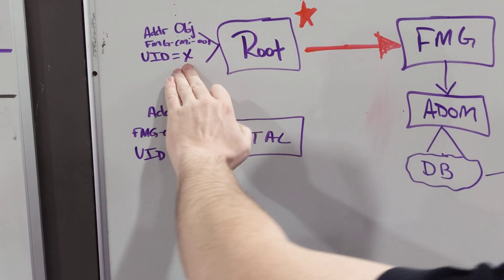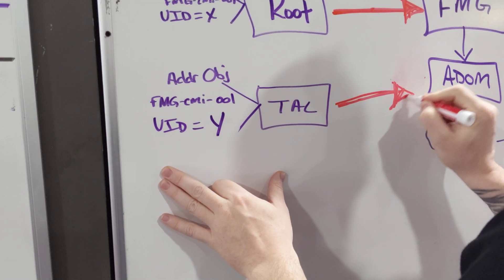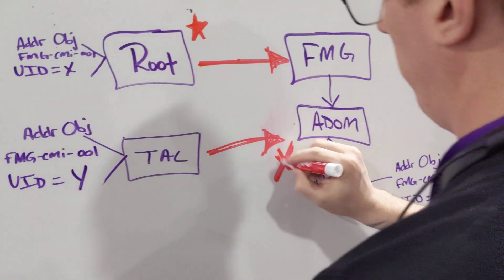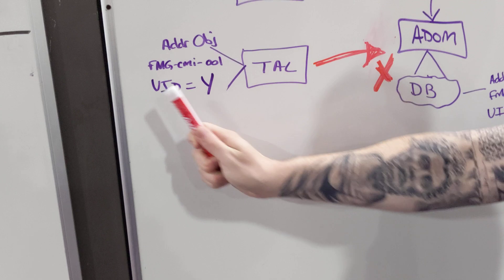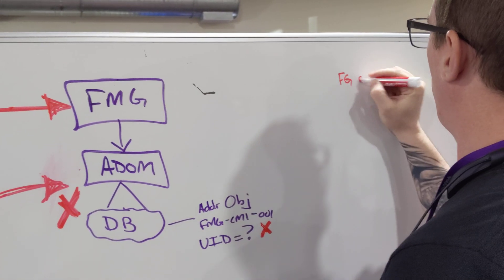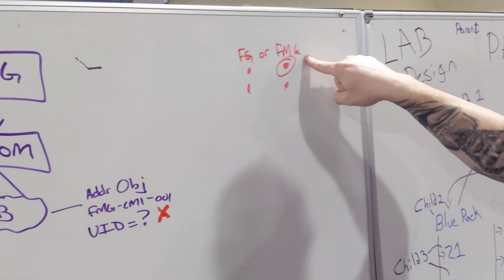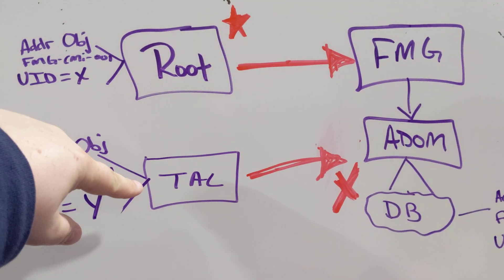Then we're going to import the next firewall. We're going to get a bunch of prompts saying there are issues because this address object already exists and has a different unique identifier value. You're going to get a conflict screen that says FortiGate or FortiManager, with little dots for every single conflict that you're going to have to pick. When it says FortiGate or FortiManager, it's really asking which unique identifier you're choosing — root or Tallahassee — and we're choosing root because that's our default database for the FortiManager.